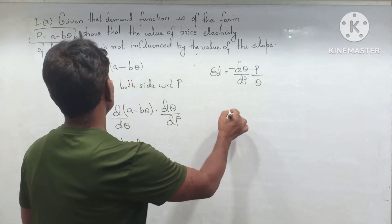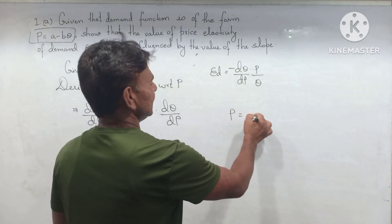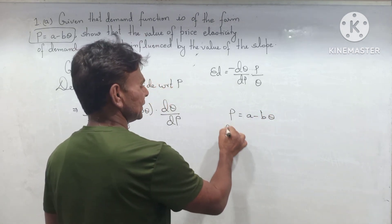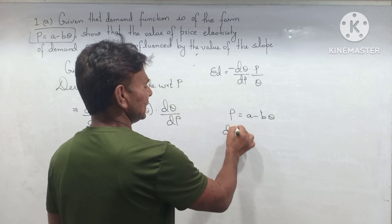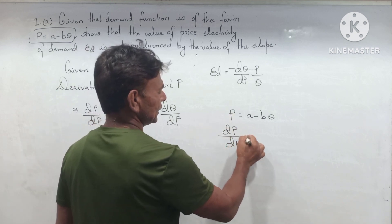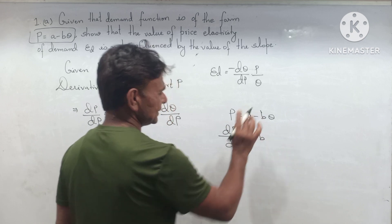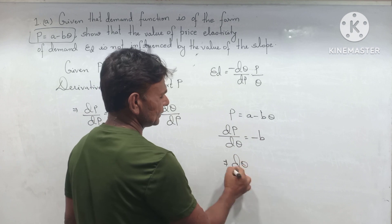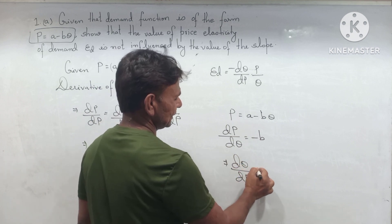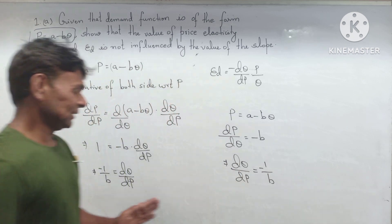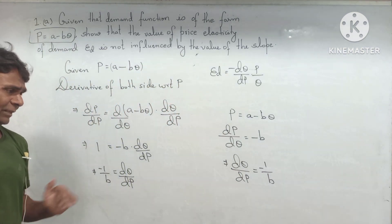Suppose that P = A - BQ. Taking the derivative with respect to Q gives us -B, since A is constant. Taking the reciprocal of both sides yields the same result. This method appears easier than the previous one.